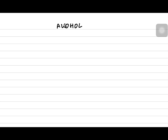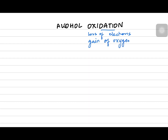Hey everyone, welcome back to another video by CamRoom5. Today's video is going to be about alcohol oxidation. Let's define oxidation, which is loss of electrons — when you lose electrons, that's oxidation. Another definition is gain of oxygen, so when something reacts with oxygen that's also oxidation, or it's loss of hydrogen.